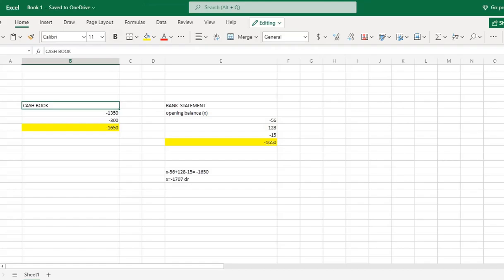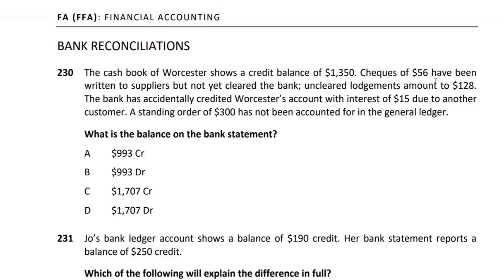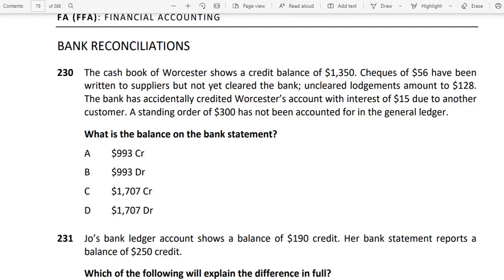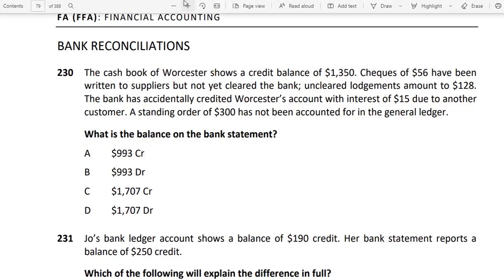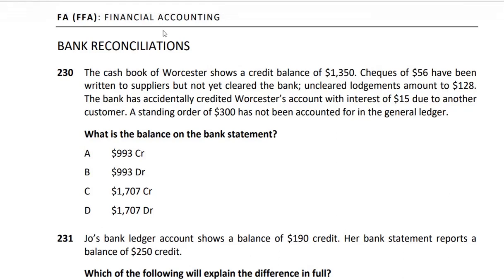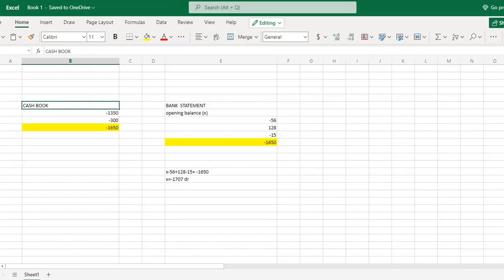The cheques written to suppliers but not yet credited by the bank means the cash book has already recorded the payment, but the bank has not yet processed it. So we will report it on the credit side of the cash book, and adjust the bank statement by minus 56.